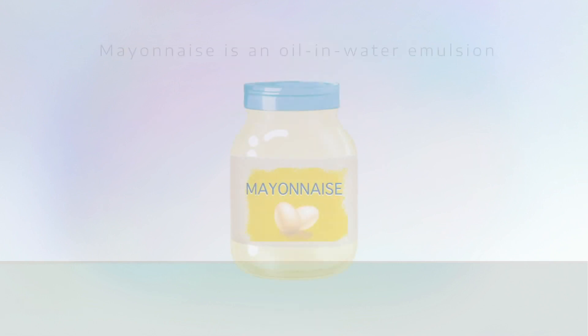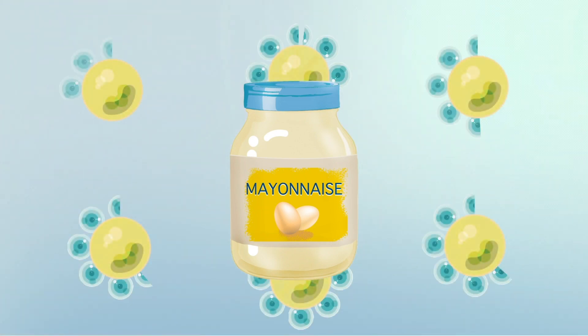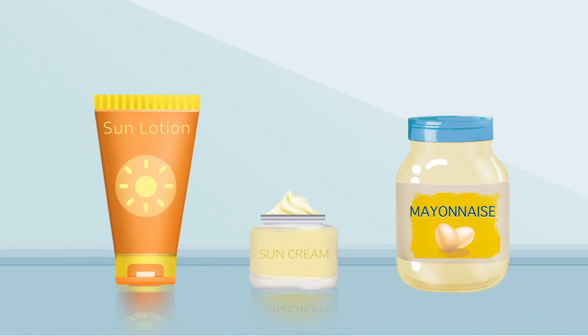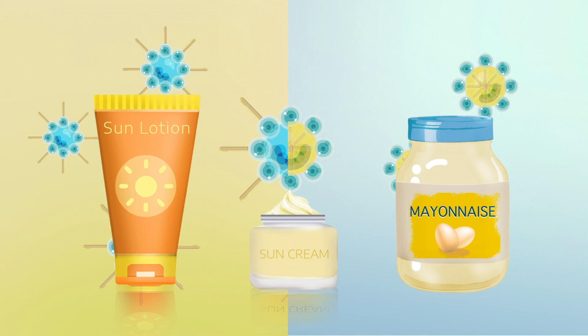In contrast, mayonnaise is an example of an oil in water emulsion. The vegetable oil forms tiny droplets within the aqueous phase. In both cases, emulsifiers are needed to prevent the dispersed droplets from coalescing and breaking the emulsion.